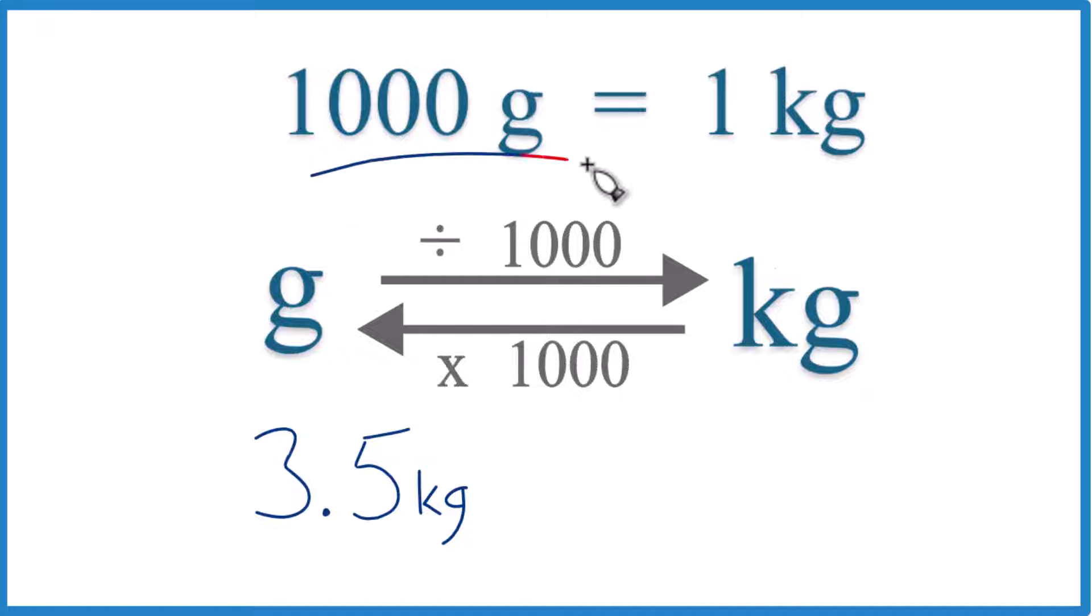So you need to know that 1,000 grams equals 1 kilogram. We call this a conversion factor, and you need it if you're going from grams to kilograms or kilograms to grams.